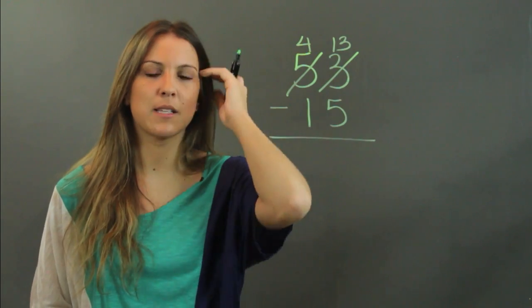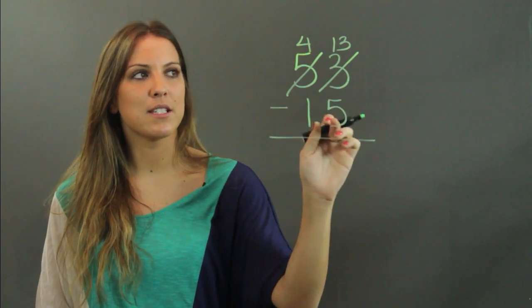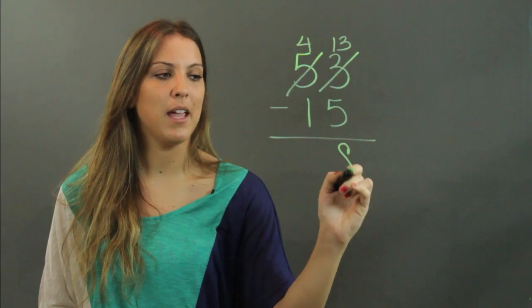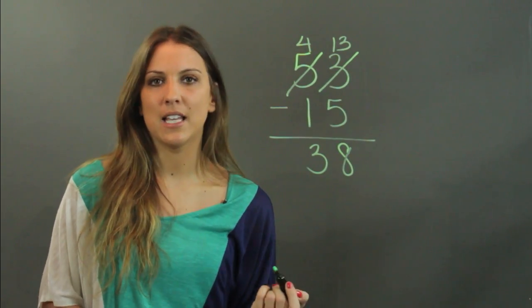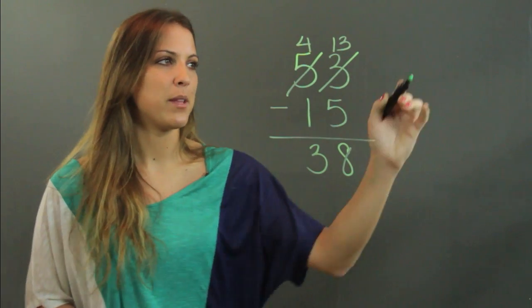And now we can go ahead and subtract. So 13 minus 5, I can do that, that's going to be 8. And then 4 minus 1 is 3. So 53 minus 15 is 38.